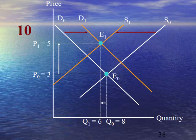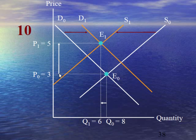Case number 10 explains that rise in demand is less than fall in supply. As a result, equilibrium quantity will shift from 8 to 6 and equilibrium price will increase from 3 to 5.